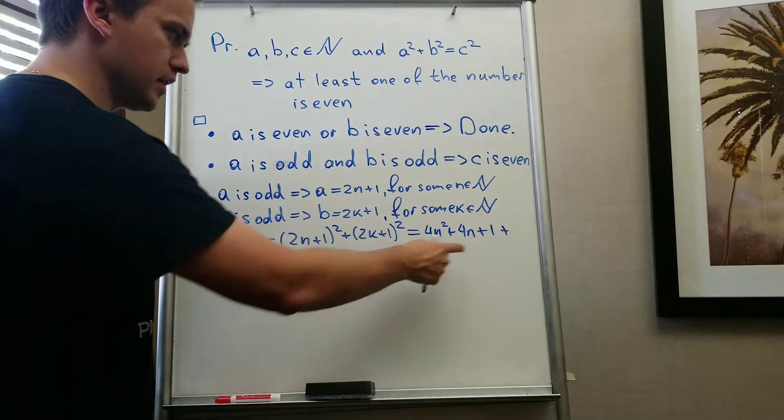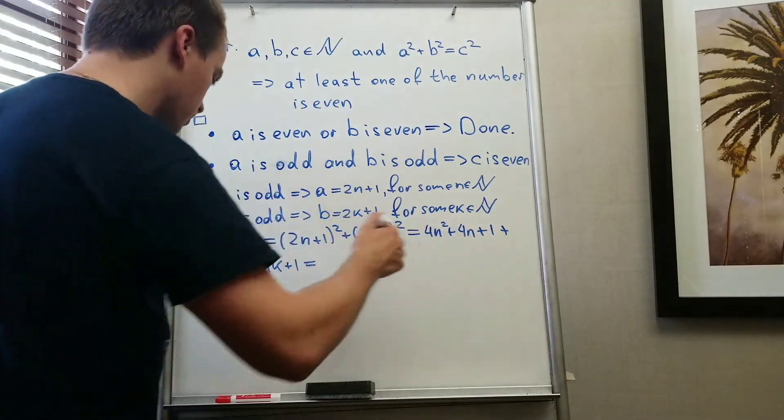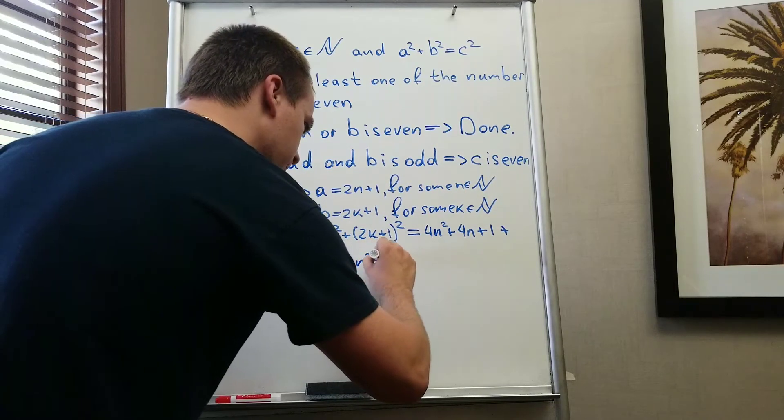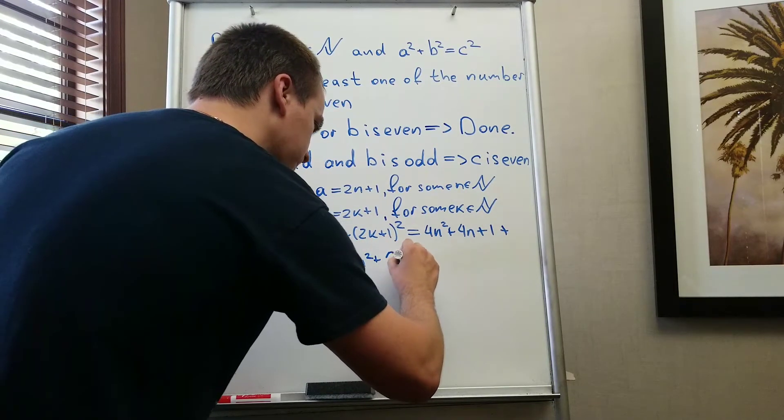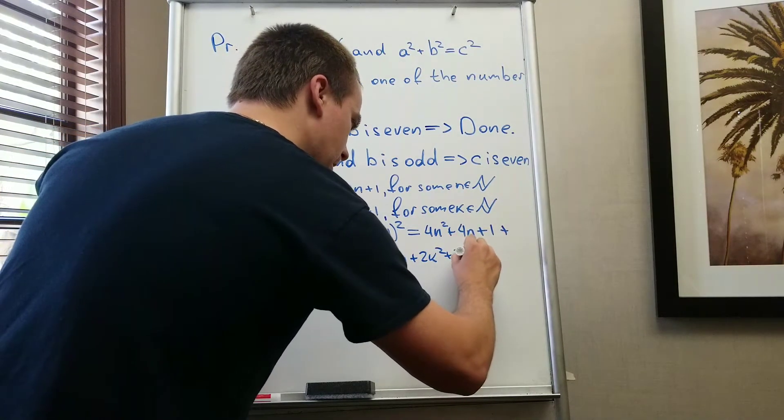plus 4k plus 1. And you can see you have 1 plus 1 is going to be equal to 2, so you can factor 2. When you're going to factor 2, you will get 2n squared plus 2n plus 2k squared plus 2k plus 1.